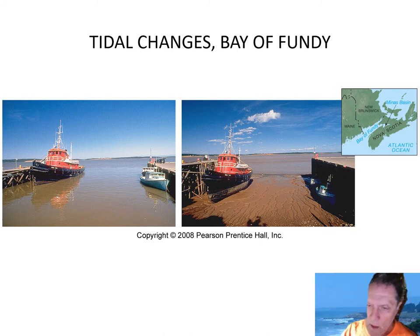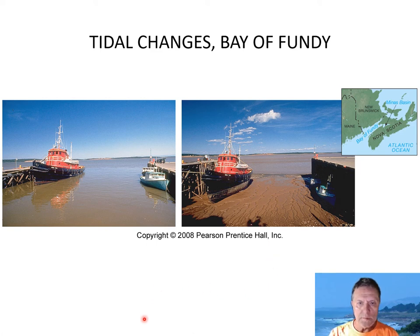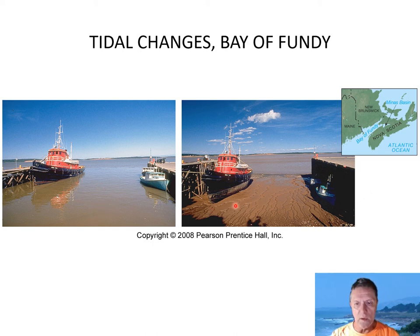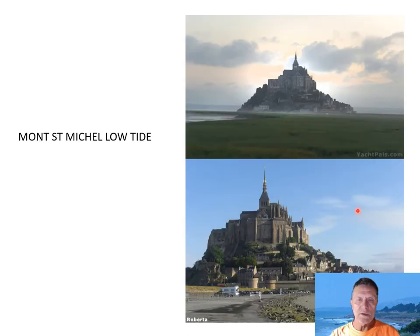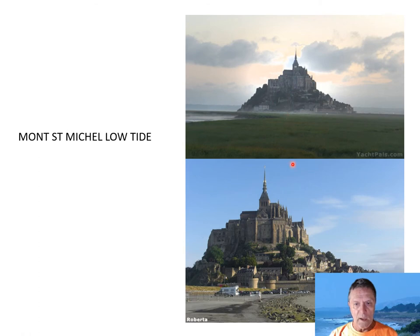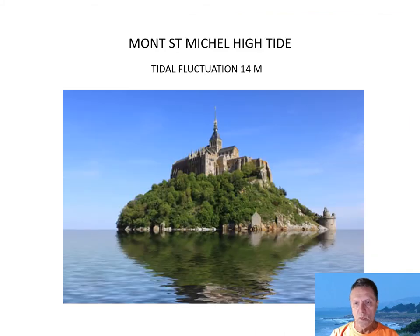Some tides can be extreme, depending on the shape of the shoreline or a bay that tides rush into. At the Bay of Fundy in Nova Scotia, Canada, the tide variation between high and low tide can be as great as 50 feet. Here's another place with extreme tides — Mont Saint-Michel in France. It's an island with a medieval monastery complex built on it. Tides can range up to about 45 feet — 14 meters. At low tide, tourists can walk along the causeway to visit the buildings. When it's high tide, everything is flooded.